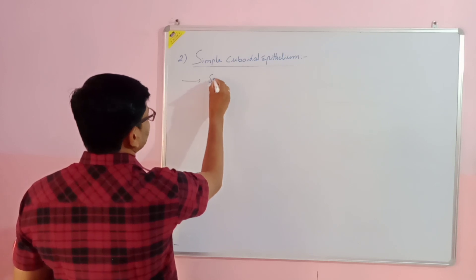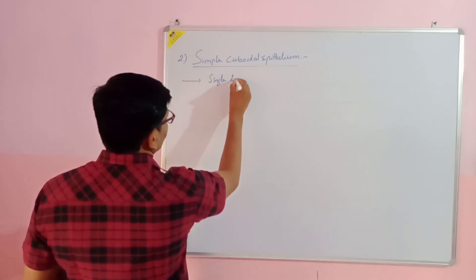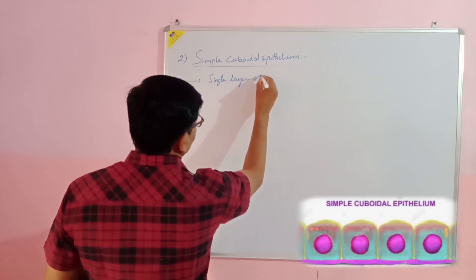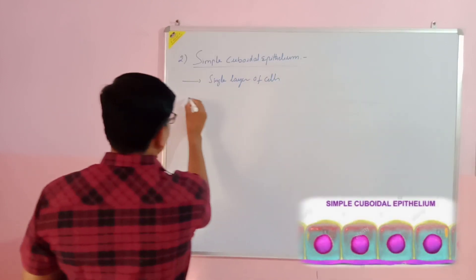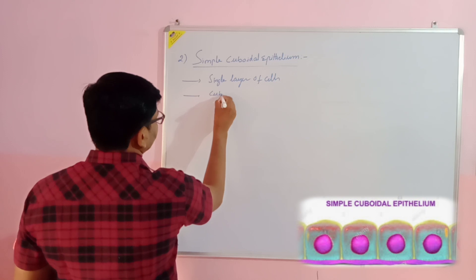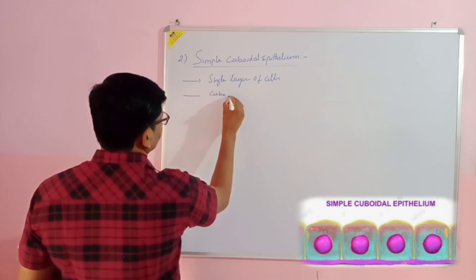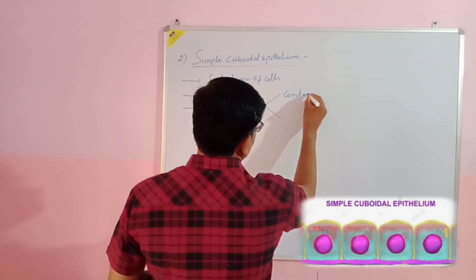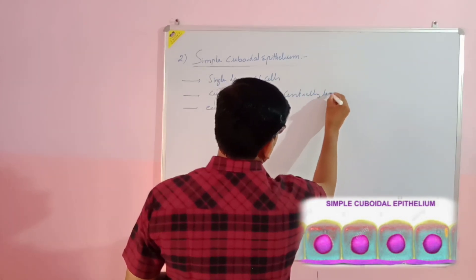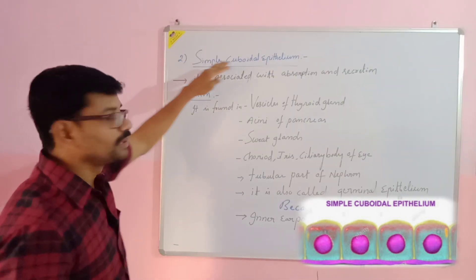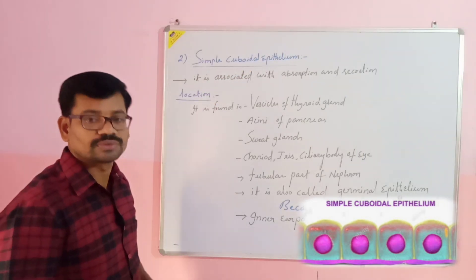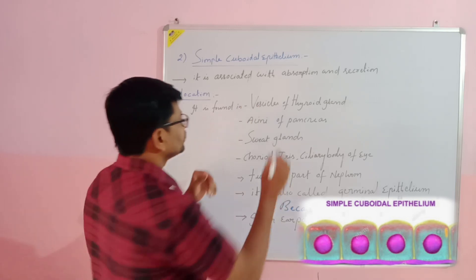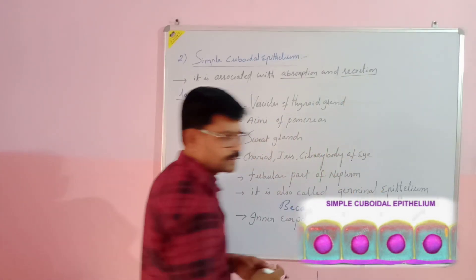Simple cuboidal epithelium is made up of a single layer of cells. The shape of the cells is cube-like, and each cell contains a centrally located nucleus. The role of simple cuboidal epithelial tissue in our body is mostly absorption and secretion.